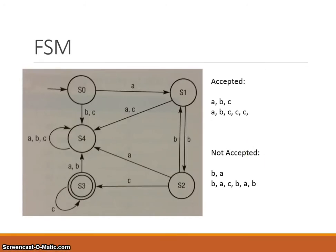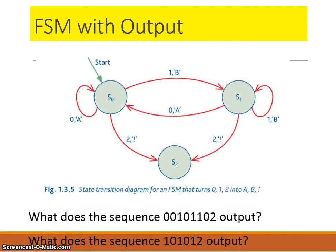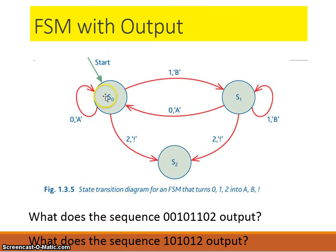One last type of finite state machine: a finite state machine with output. This would not be on the Year 1 AS exam paper but is in Year 2 for the full A-level. The output is represented after a comma — the input is the character before the comma and the output is after. For example, starting at state 0 and providing input 1 gives an output of B and takes us to state 1. Providing input 0 from state 1 gives an output of A and takes us back to state 0. Have a go at the two sequences shown to work out what the output is.